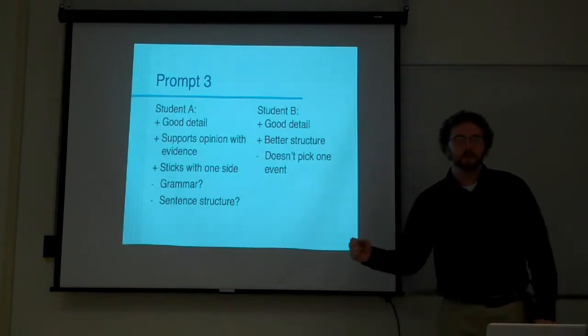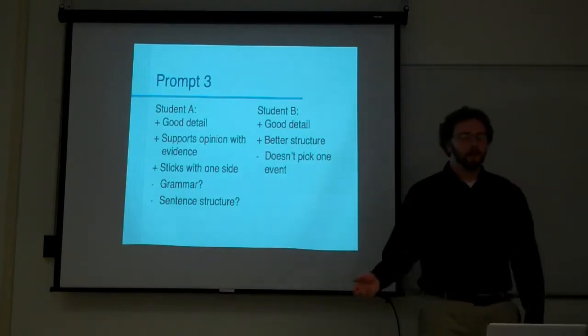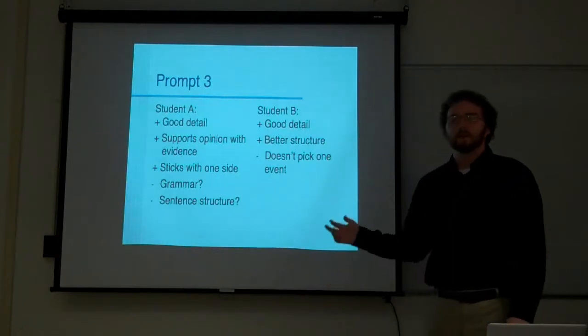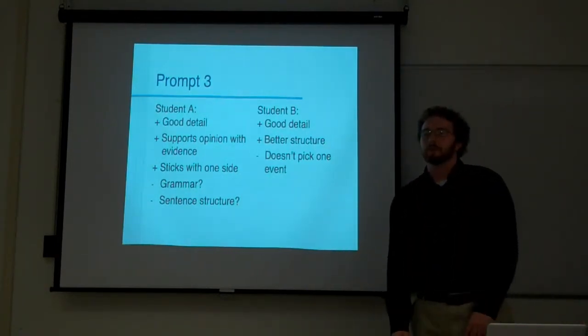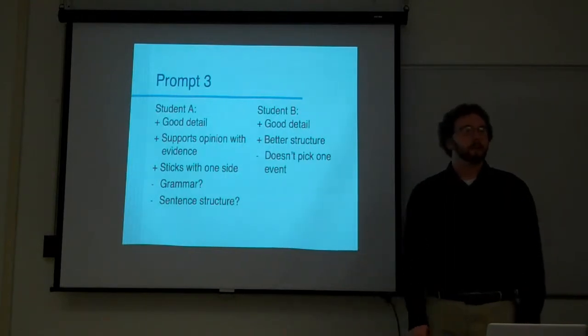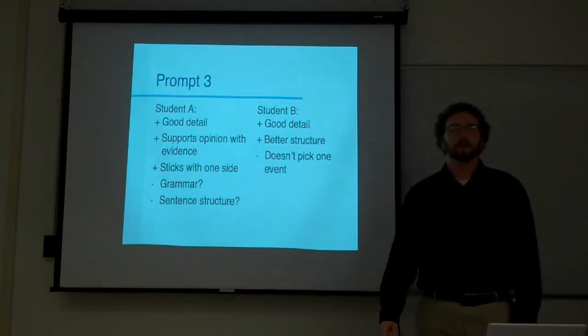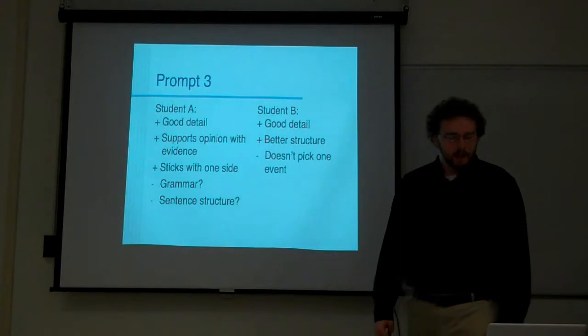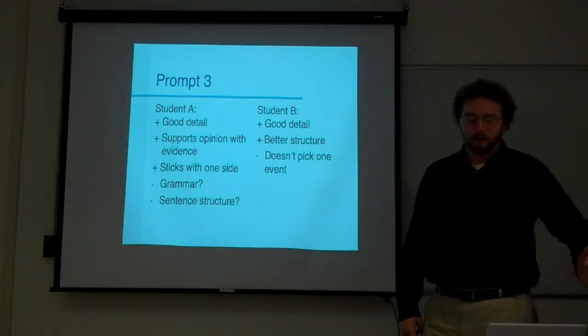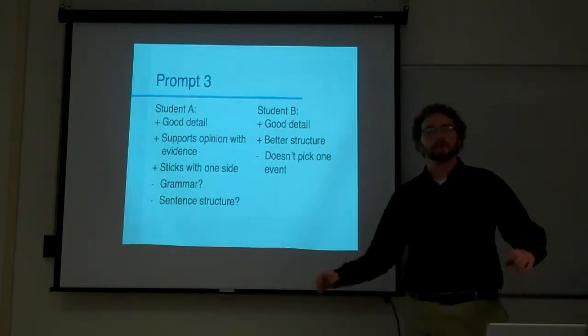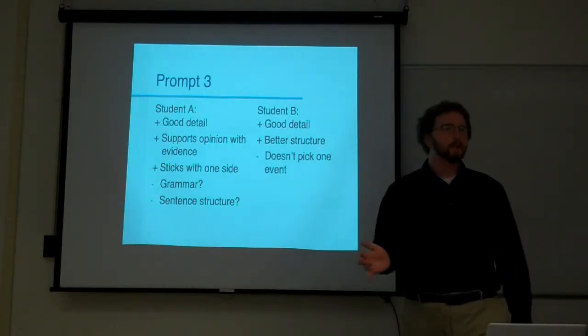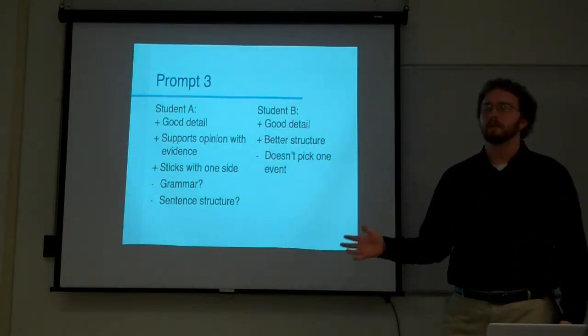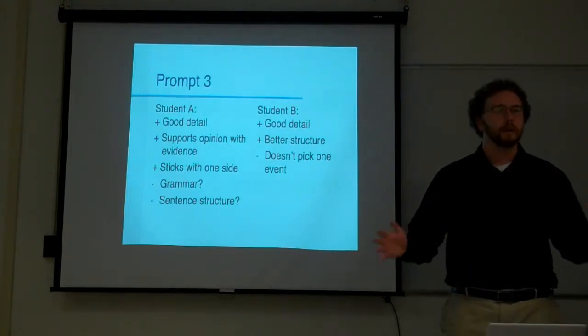So student A, good detail. She supports her opinion with evidence. She sticks with one side. For the future, really, it's kind of about grammar and sentence structure, which I've realized I need to kind of focus a bit on so I can help improve their writing. Student B had good detail. Her structure was better. It wasn't like a bulleted list. She actually had a paragraph. But she doesn't pick one event. She does not have her argument because she kind of goes back and forth.